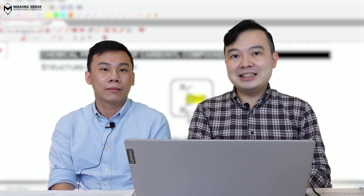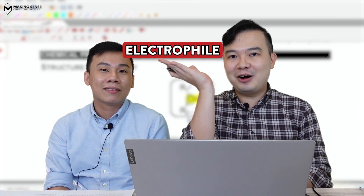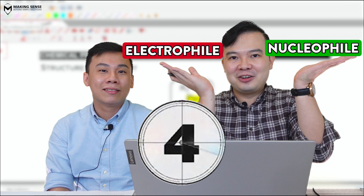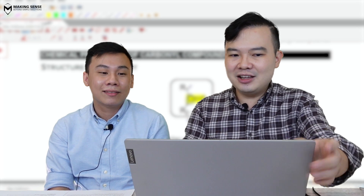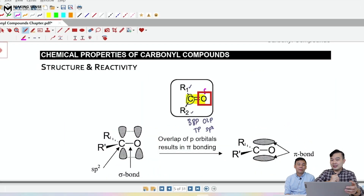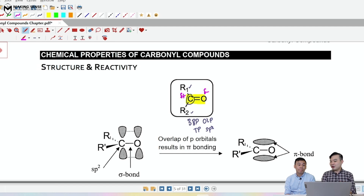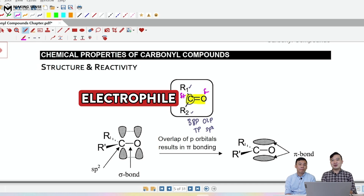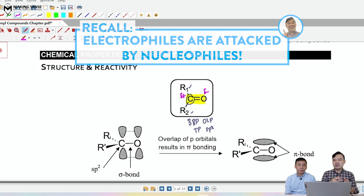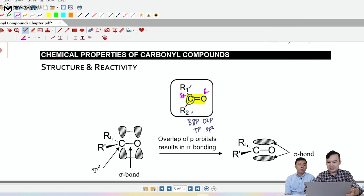Here comes the million dollar question: is a carbonyl compound an electrophile or a nucleophile? The oxygen is a very electronegative atom, so as a result, the carbon will be very electron deficient — delta plus — making it an electrophile. Since it's an electrophile, it is going to get attacked by nucleophiles. Carbonyl compounds themselves are electrophiles, so they will not undergo electrophilic reactions; they will undergo nucleophilic reactions.